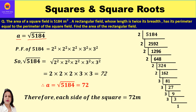To find the square root of 5184, we are going to use the prime factorization method. Since 5184 is an even number, we start with 2: 5184 ÷ 2 = 2592, ÷ 2 = 1296, ÷ 2 = 648, ÷ 2 = 324, ÷ 2 = 162, ÷ 2 = 81. Now we divide by 3 since 81 is odd and divisible by 3.